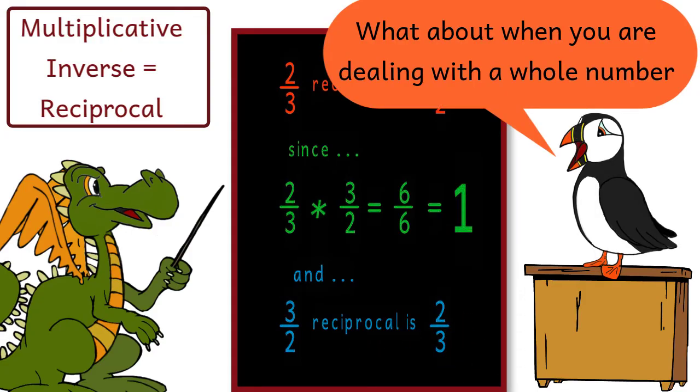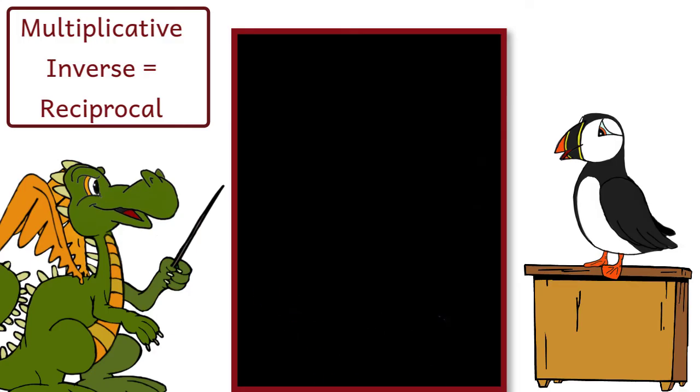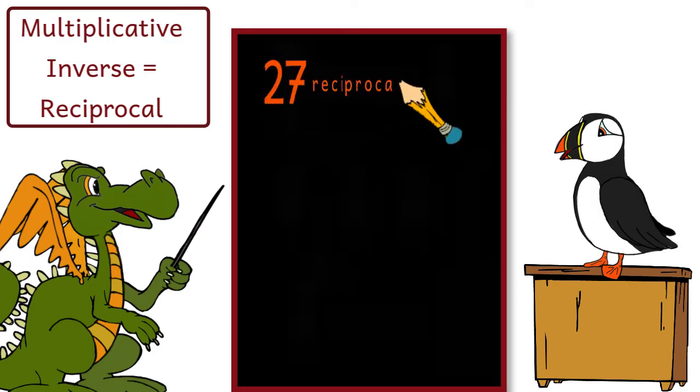What about when you're dealing with a whole number? To find the reciprocal of 27, we would write it first as the fraction 27 over 1. Then we would flip the fraction, getting 1 27th.